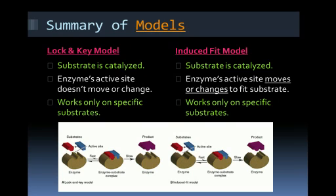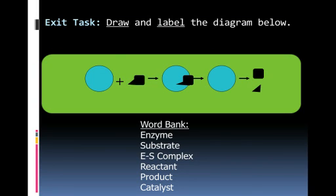So summary, we have lock and key model versus the induced fit. You can see there are similarities and differences. And then finally, you should be able to take what you've learned through this podcast, draw this diagram after you've done your summary. This then becomes your exit task. And then there's a label which part is which. So use the word bank at the bottom of the screen.